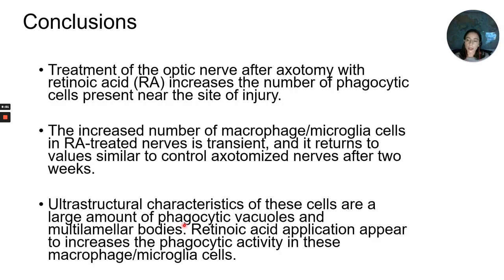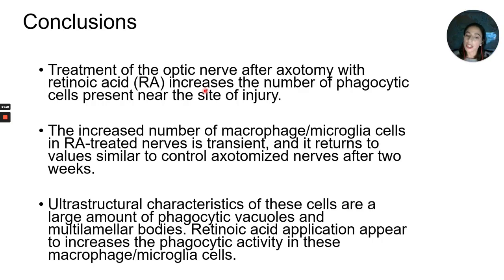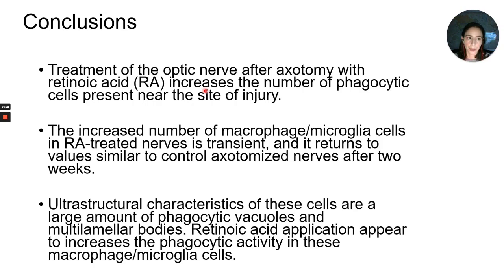In conclusions: treatment of the optic nerve after axotomy with retinoic acid increases the number of phagocytic cells present near the site of injury. The increased number of macrophages and microglia cells in retinoic acid-treated nerves is transient — at two weeks we did not see macrophages in the same high numbers as at one week. Ultrastructural characteristics show a large amount of phagocytic vacuoles; at one week, multilamellar bodies are visible, and especially in the retinoic acid applications, there appears to be an increase in phagocytic activity, though this requires confirmation through future quantification.